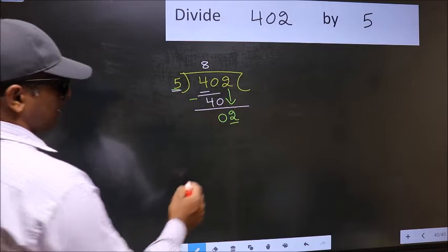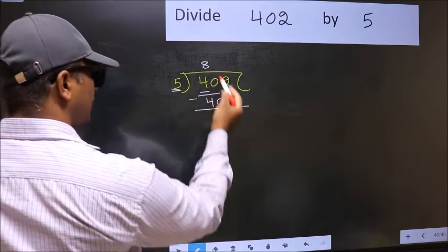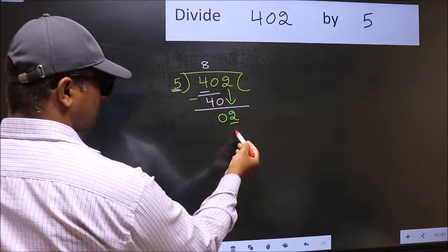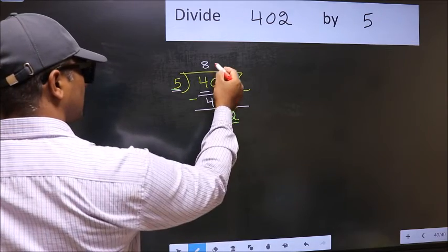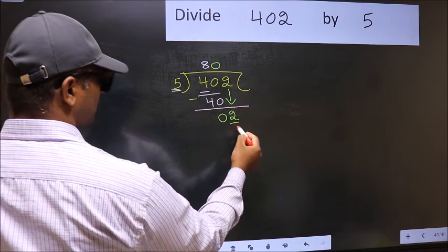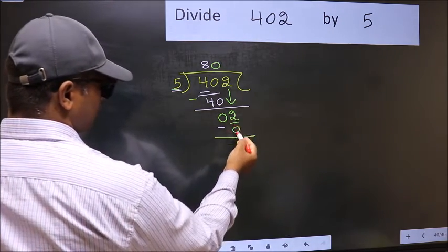Instead, what you should think of doing is: what number should be right here? If I take one here, I will get 5, but 5 is larger than 2. So we should take 0. So 5 into 0: 0. Now you should subtract 2 minus 0: 2.